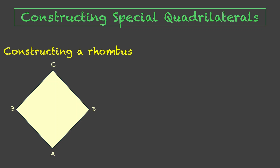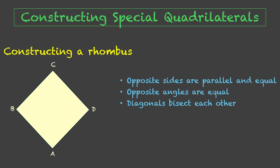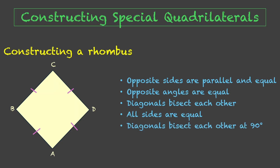Since a rhombus is a parallelogram, it has all the properties of the parallelogram, which are: opposite sides are parallel and equal, opposite angles are equal, and diagonals bisect each other. But then rhombus has certain unique properties of its own, which are: all sides are equal — AB = BC = CD = DA — and diagonals bisect each other at 90 degrees, so AC and BD bisect each other at 90 degrees.